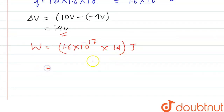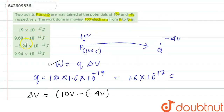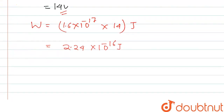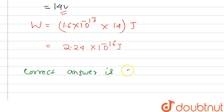So if we solve this, this will be 2.24 into 10 to the power minus 16 joule. If we check the options, the correct option is 2.24 into 10 to the power minus 16 joule. So the correct answer is 2.24 into 10 to the power minus 16 joule. Thank you.